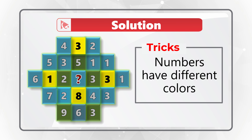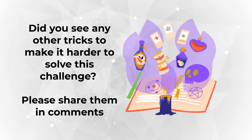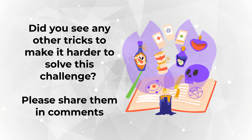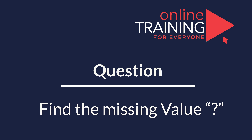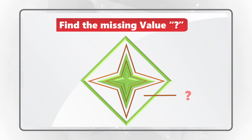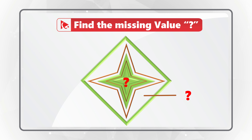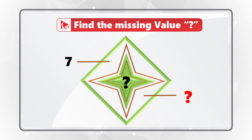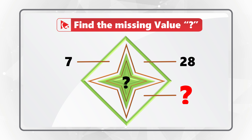Question designers introduced tricks to confuse you. The boxes have different colors — blue, yellow, and green — but this contributes nothing to the pattern calculations. Similarly, numbers in yellow boxes are black while numbers in blue and green boxes are white; this color difference is also irrelevant to solving the problem.